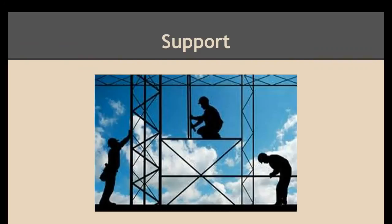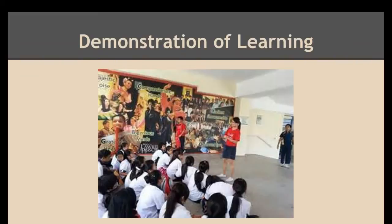Back to rigor — the third element in a rigorous classroom is support. According to Barbara Blackburn, it's essential that teachers design lessons that move students from less challenging to more challenging work while providing supports along the way. Additional scaffolding is the most important way to support students. Providing appropriate scaffolding does require careful planning, and we'll talk about planning a little bit later.